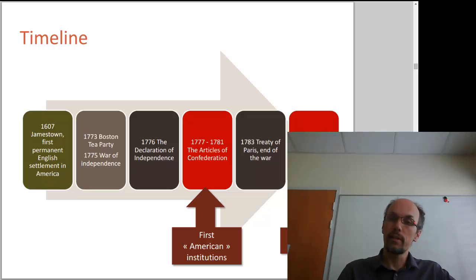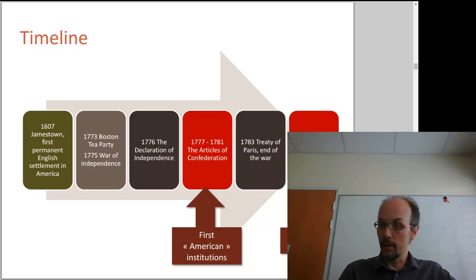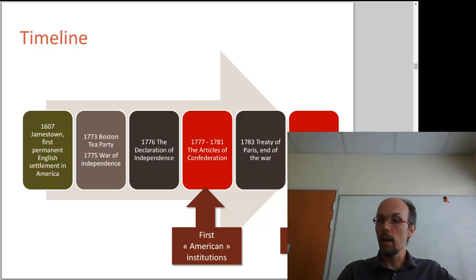The war ended in 1783, and it quickly appeared that the Articles of Confederation were insufficient. So a few years after that, in 1787, a constitutional convention was called. The idea was to rework the Articles of Confederation, and this Constitutional Convention led to the Constitution, which is the basis for the current system of government in the United States.